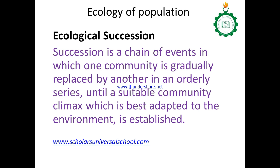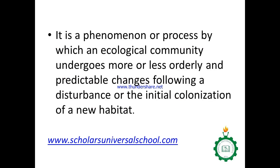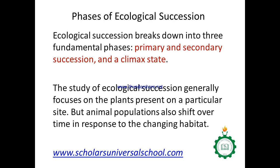Succession is a chain of events in which one community is gradually replaced by another in an orderly series until a suitable or climax community is achieved. It is a gradual and orderly process, and sometimes you can even predict some changes that will occur. After a disturbance or initial formation of soil, a plant community takes over that landscape. Ecological succession can be divided into three phases: primary, secondary, and climax states.